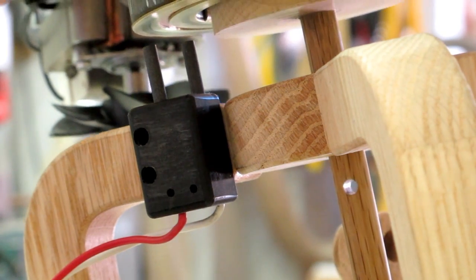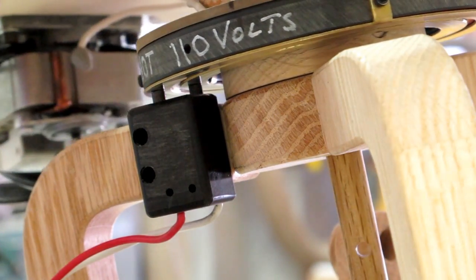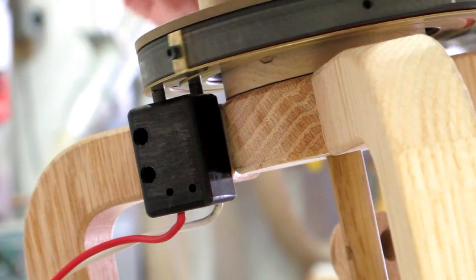When we lower the slip ring on top of the brush holder, you can see the brushes are maintaining contact as the slip ring rotates.